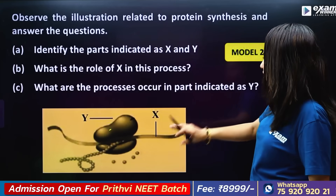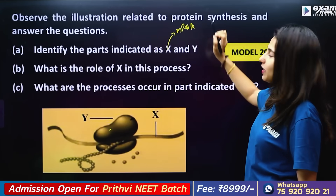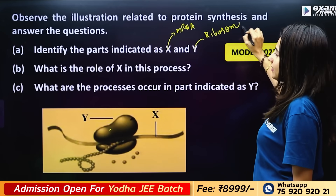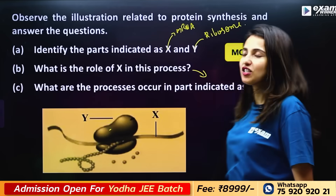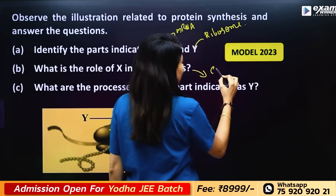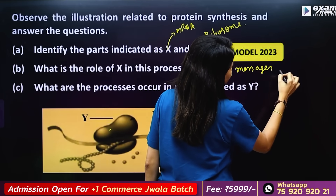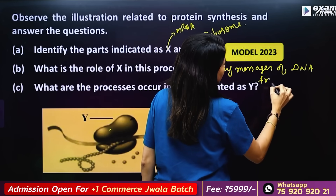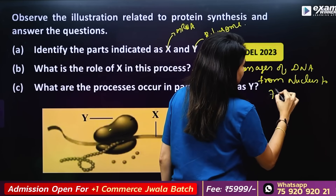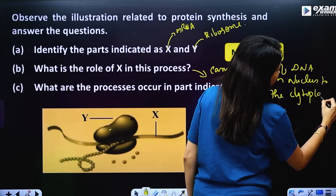What is X and what is the role of X in this process? X carries messages of DNA from the nucleus to the cytoplasm — that is the role of mRNA in this process.